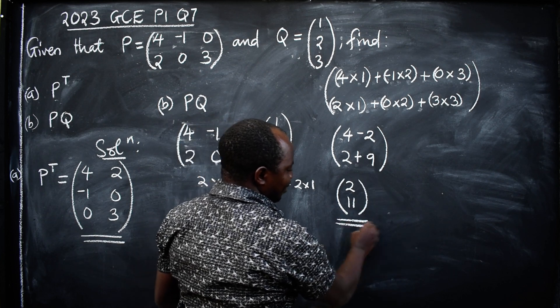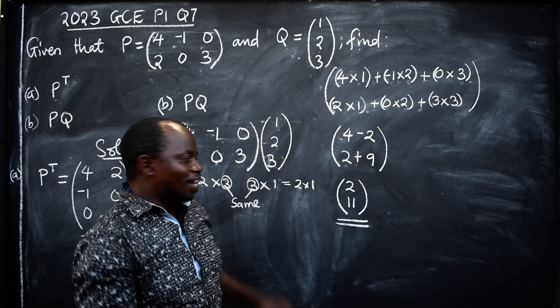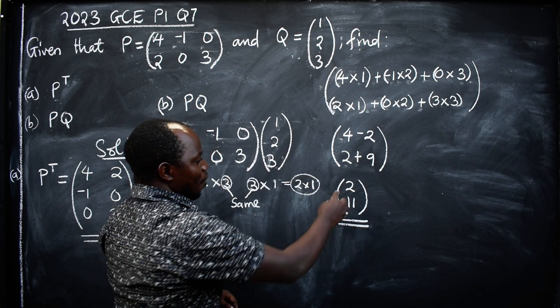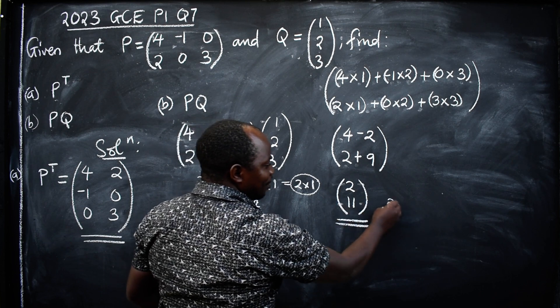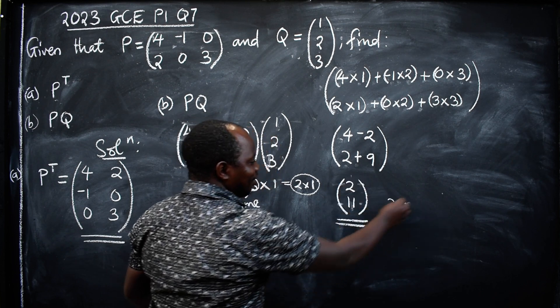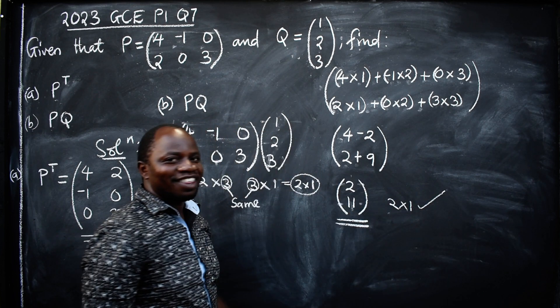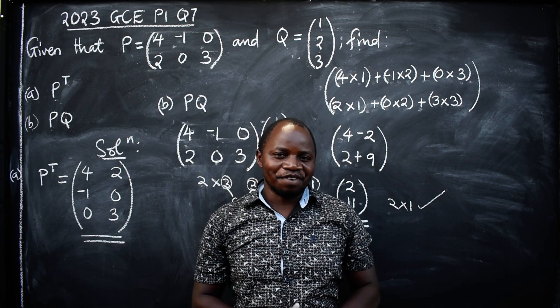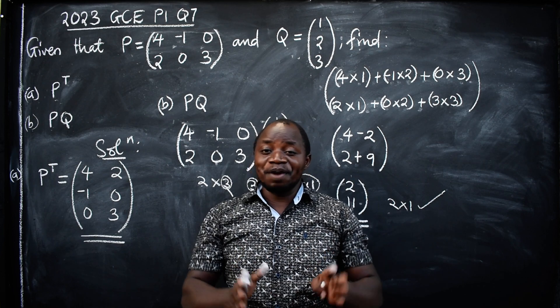This is our final answer. Now we can check, is it a 2 by 1? One, two, by one. Correct. That is the way we multiply matrices. Thank you very much for watching. Remember to subscribe to my YouTube channel, follow me on Facebook and TikTok. Bye bye.